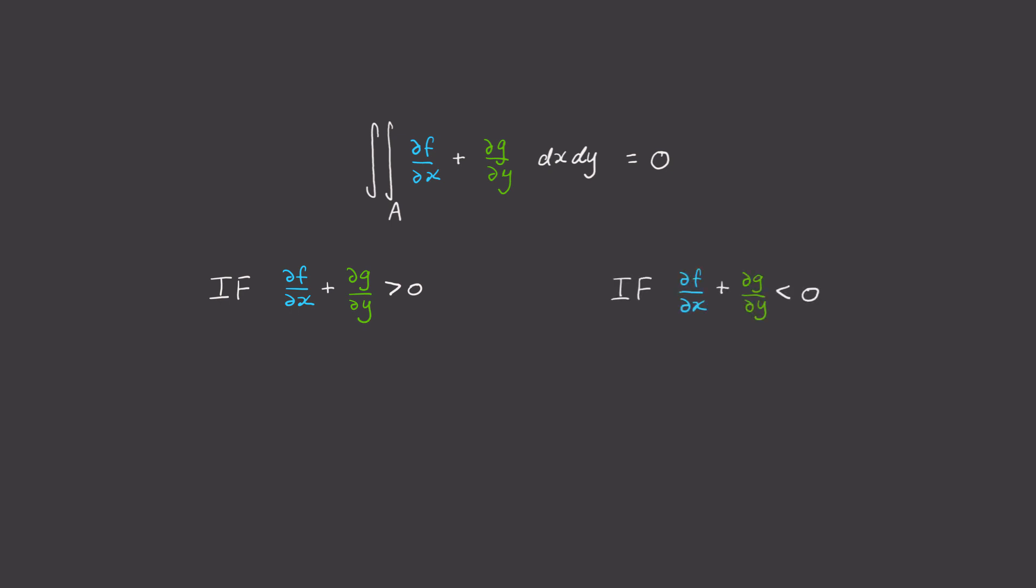Likewise, if the stuff inside is always negative, then the integral will also end up being negative, so not 0. And so, therefore, in regions where these cases are true, we can rule out the existence of periodic orbits.